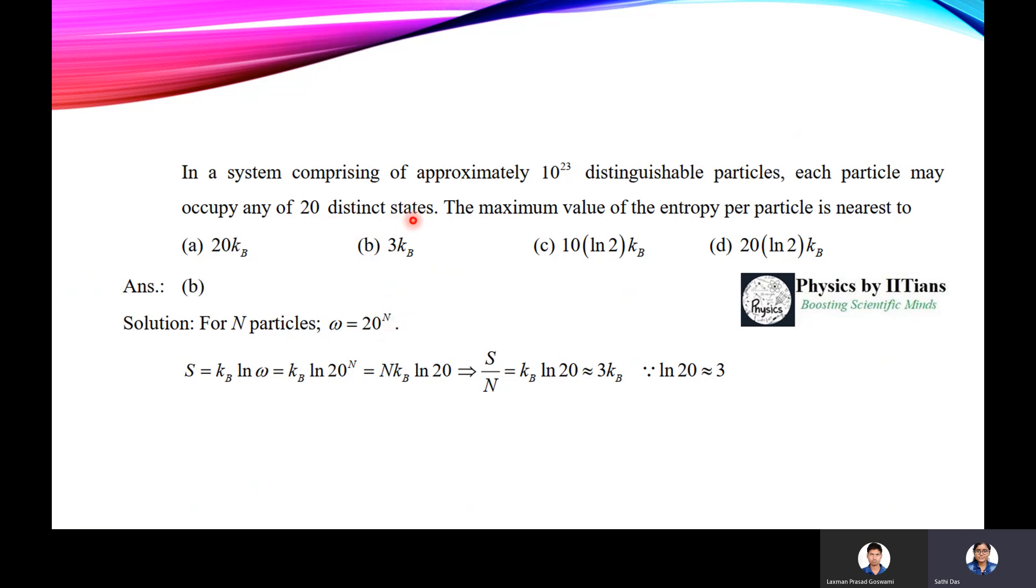Gi is the number of states and ni is the number of particles. So here the number of states are 20, so 20 to the power N for N number of particles. Now S, that is the entropy, can be written as kb ln omega from the Shannon definition of entropy. So we can write kb ln 20 to the power N, or N kb ln 20. So S by N, that is the entropy per particle, is kb ln 20.